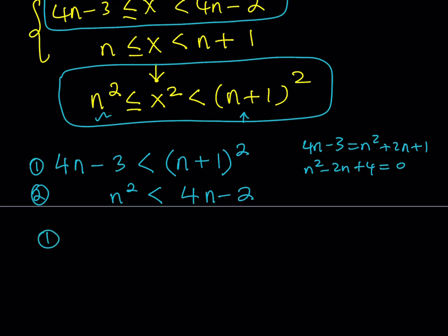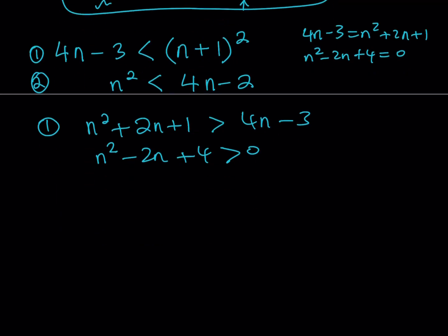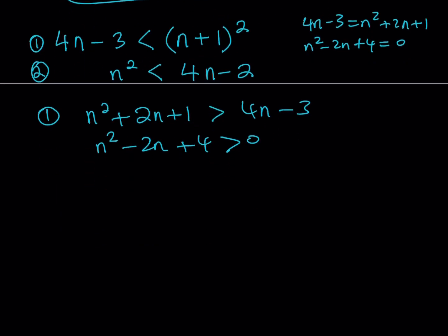Looking at the first inequality: expanding gives n squared minus 2n plus 4 is greater than 0. This quadratic has a negative discriminant, which means when graphed it's always above the x-axis — it has no real roots, so it's always positive. Therefore n can be anything here; the first inequality gives us no restrictions.